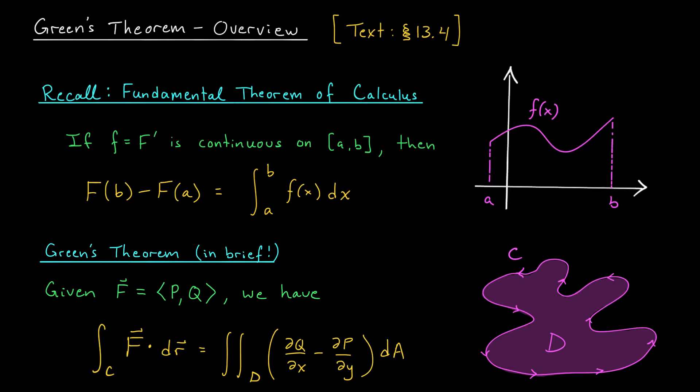To introduce this incredible result, I want you to think back to the fundamental theorem of calculus that you know from calc 1 and calc 2. We all know what the FTC says. It allows us to integrate a function little f over an interval from a to b. Specifically, it says that the value of our integral is equal to capital F at b minus capital F at a, where capital F is an antiderivative of little f.